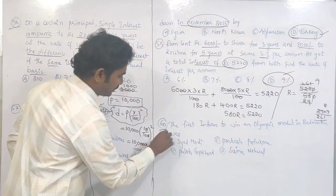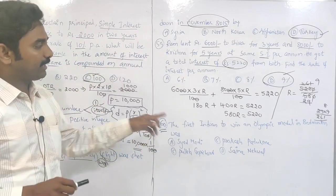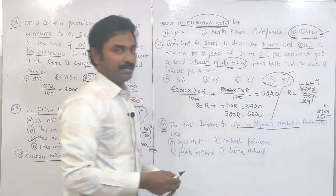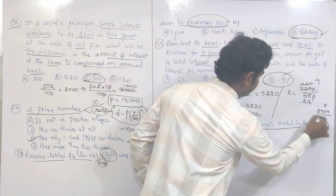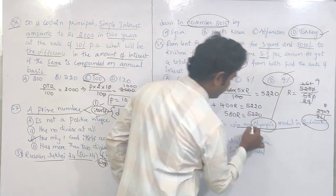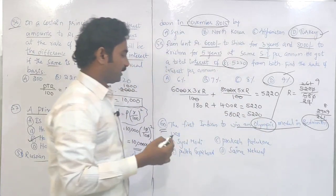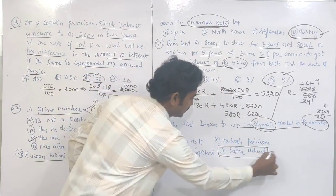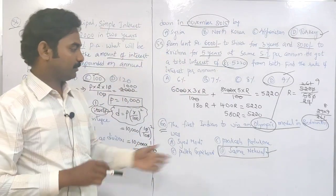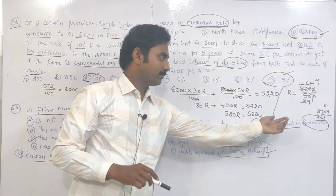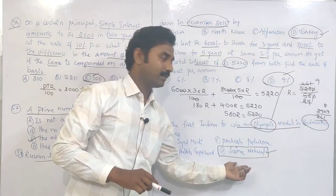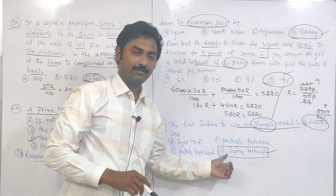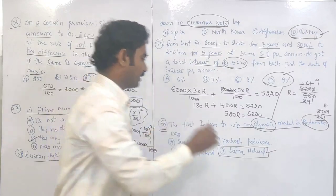Question number 60: the first Indian to win an Olympic medal. We already know — the first Indian in badminton to win an Olympic medal is none other than Saina Nehwal. Badminton famous is Saina Nehwal. She won the first Olympic medal for India. Saina Nehwal is the correct answer.